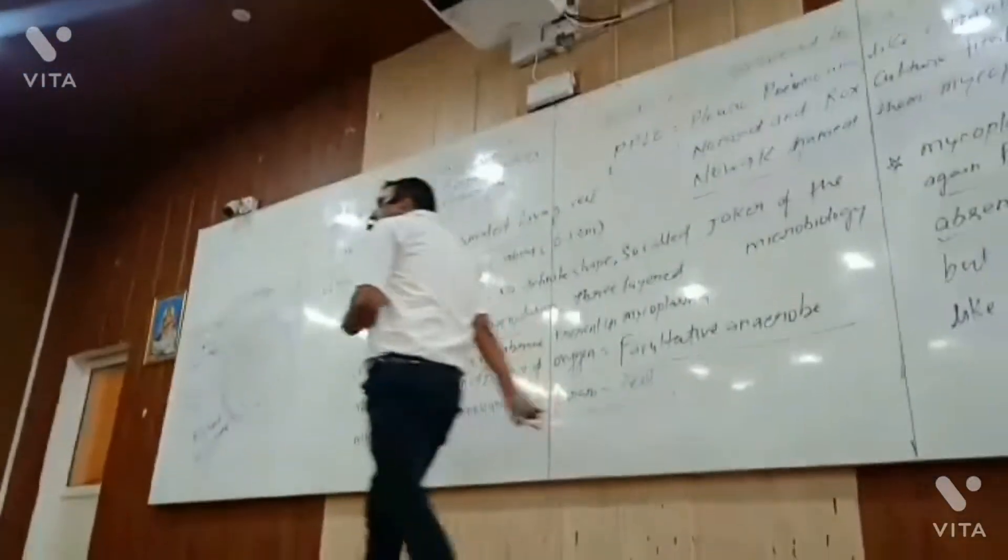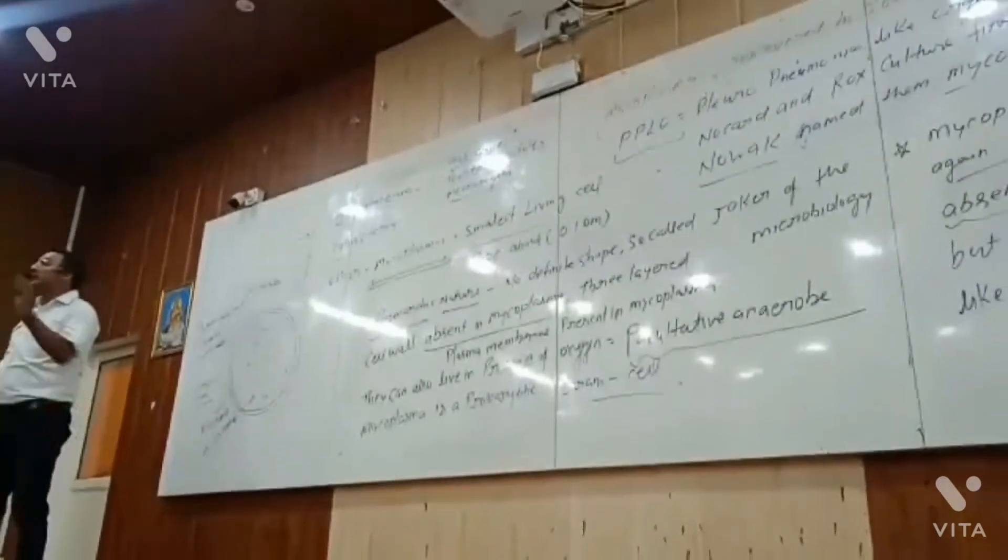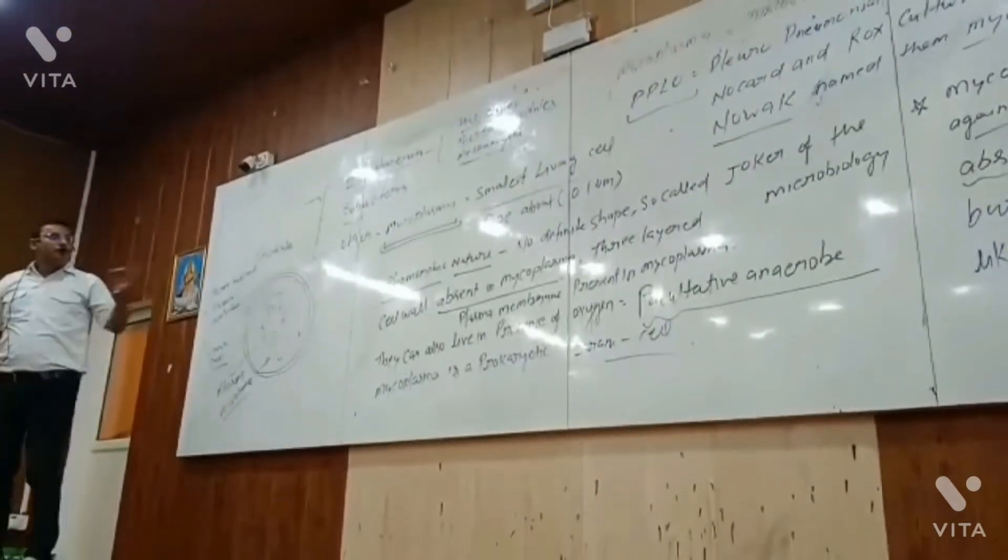What is the name of this organism? Mycoplasma. It's more or less 0.1 micrometer in size.